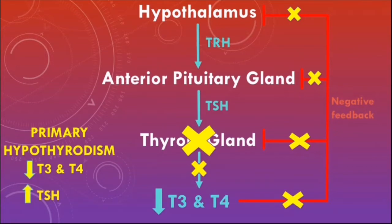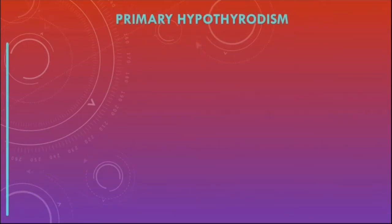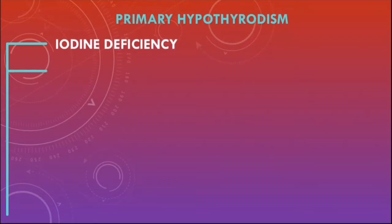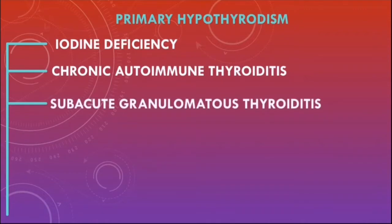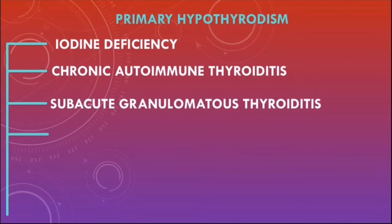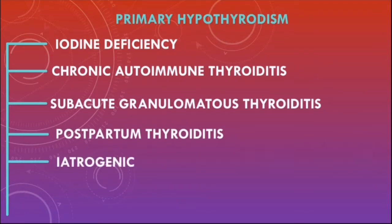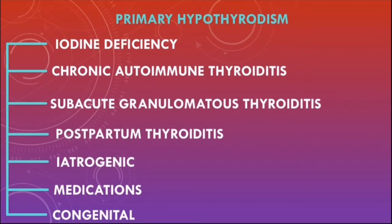The most common cause of primary hypothyroidism worldwide is iodine deficiency. The most common cause in the western world is chronic autoimmune thyroiditis, also known as Hashimoto's thyroiditis. Other causes include subacute granulomatous thyroiditis (De Quervain's thyroiditis), postpartum thyroiditis, iatrogenic causes, medications, and congenital hypothyroidism.